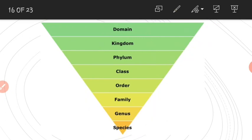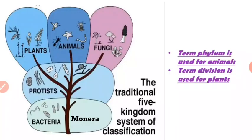I have already given you an overview of the three domains of life. Now let's move on to the next taxonomic category, which is kingdom. According to R.H. Whittaker we have five kingdoms. Kingdom Monera comprises all prokaryotic organisms, basically bacteria and mycoplasma. Kingdom Protista has all eukaryotic unicellular organisms. Kingdoms Plantae, Animalia, and Fungi represent all multicellular eukaryotic organisms — plants and algae, animals, and mushrooms and toadstools respectively.